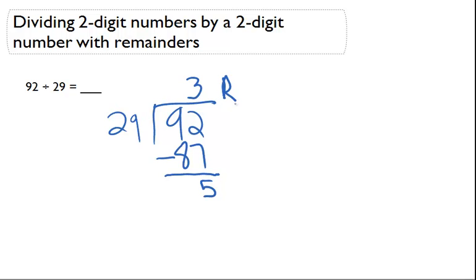That's going to be R and I'm going to move this up here, 5. The answer here is 3 remainder 5. And you can draw a big R or a small R.